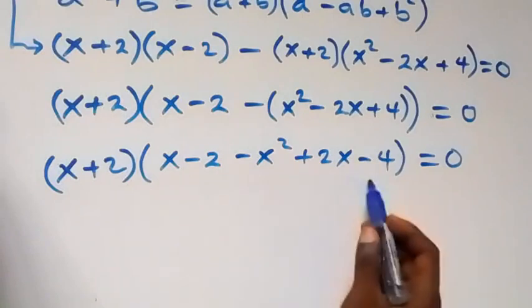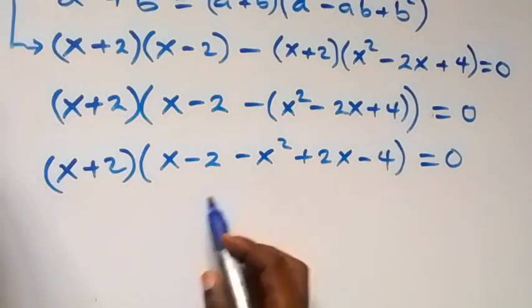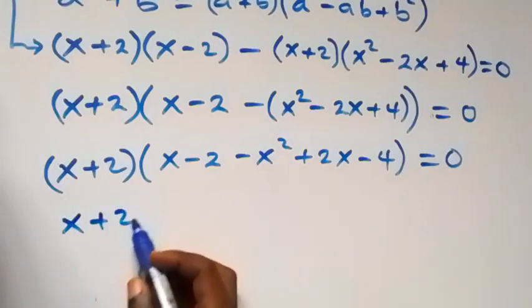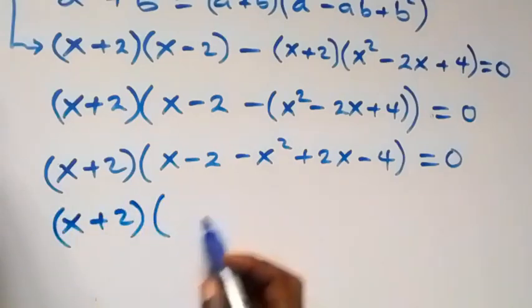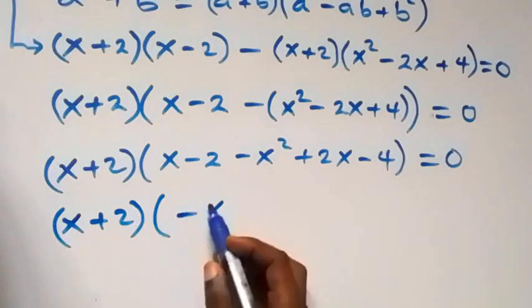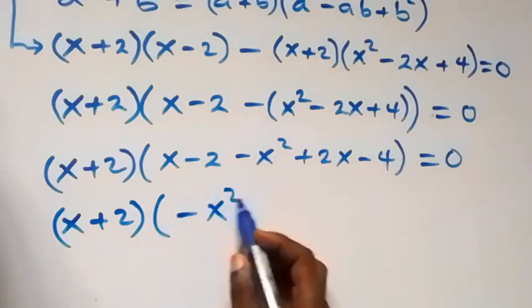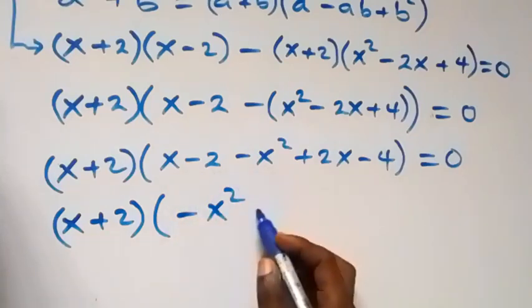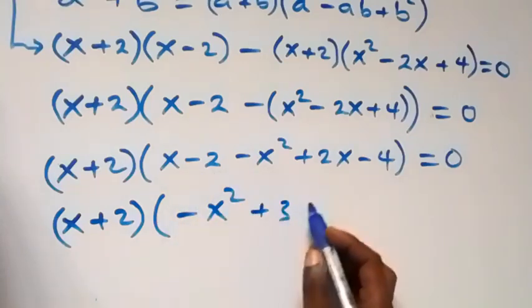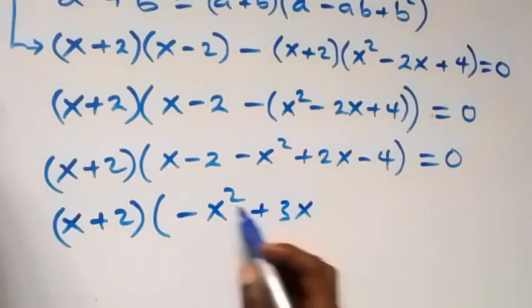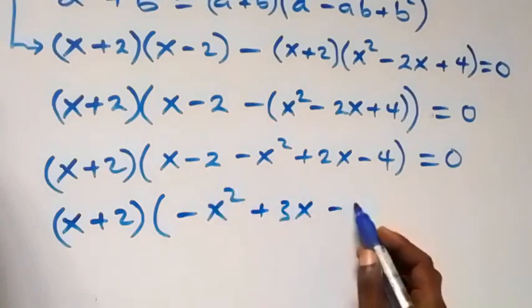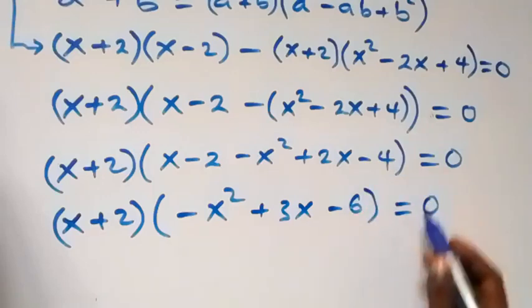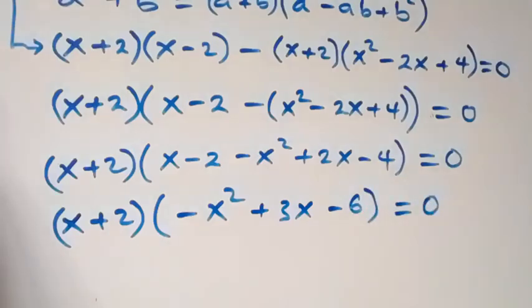Then we add the like terms and rearrange: we have (x plus 2) times (minus x squared plus 3x minus 6), now equals to zero.